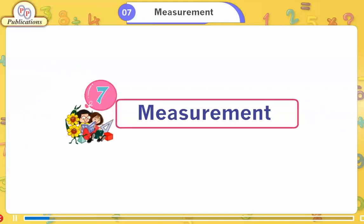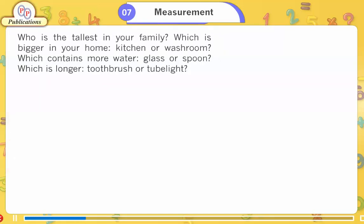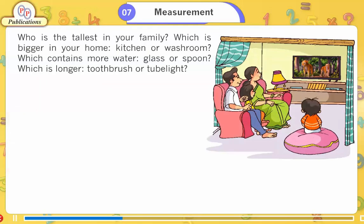Chapter 7: Measurement. Who is the tallest in your family? Which is bigger in your home — kitchen or washroom? Which contains more water — glass or spoon? Which is longer — toothbrush or tube light?